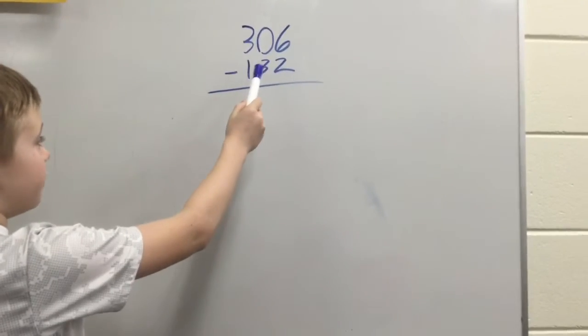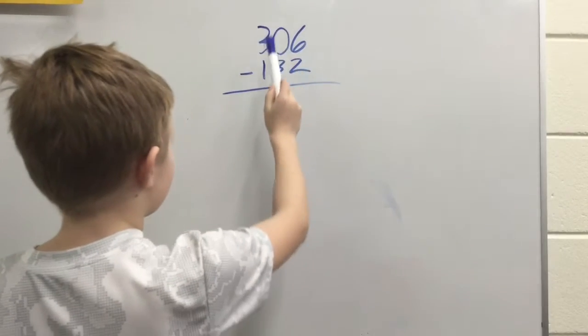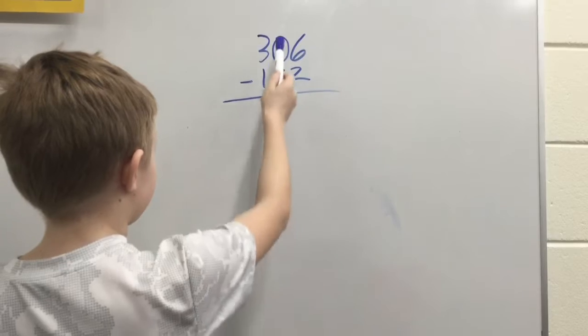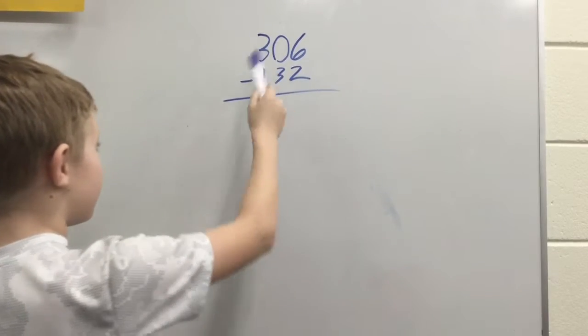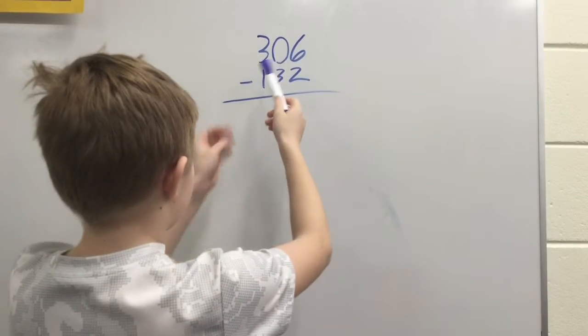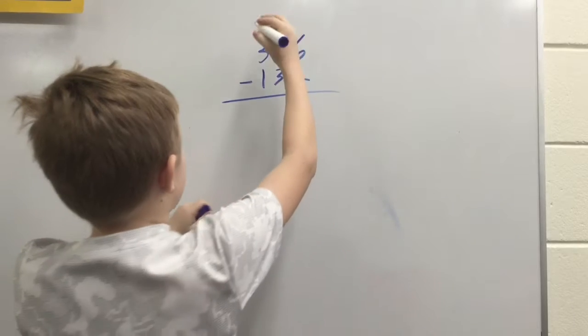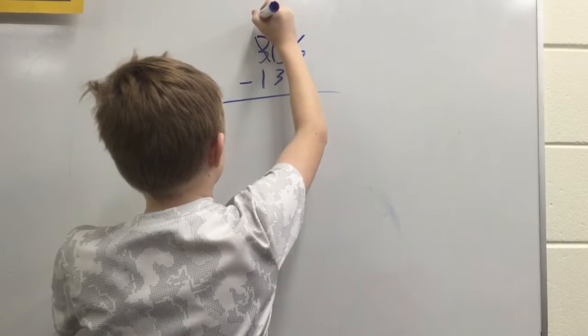So first you check all of them. You can't subtract three from zero because that would be negative three, so you have to take this, turn it into a two.